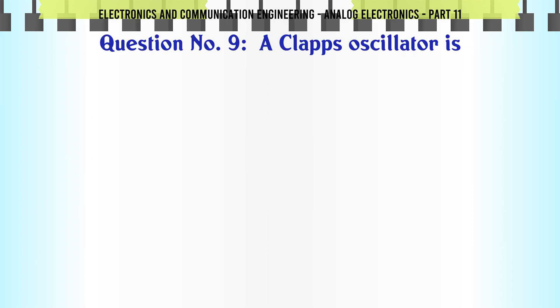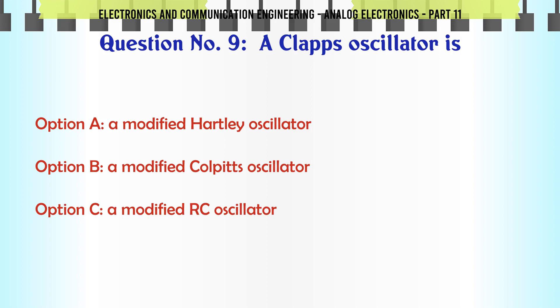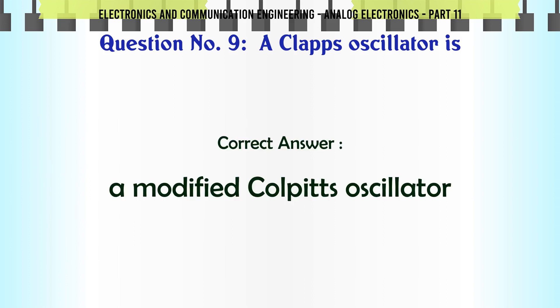A Clapp oscillator is. A. A modified Hartley oscillator. B. A modified Colpitts oscillator. C. A modified RC oscillator. D. None of the above. The correct answer is: A modified Colpitts oscillator.